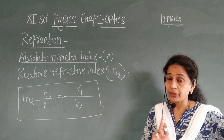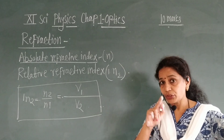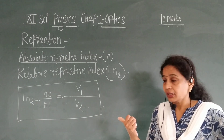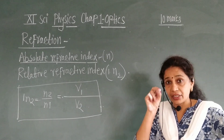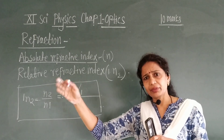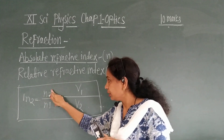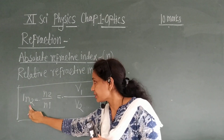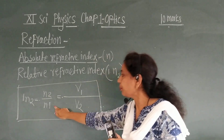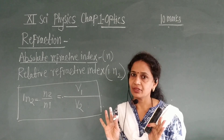There is a difference between absolute and relative refractive index. Absolute refractive index is the ratio of the velocity of light in vacuum to its velocity in any other medium. Relative refractive index is the ratio of the velocity of light in medium 1 (which may be air or diamond) to that in medium 2, given by N2 / N1 = V1 / V2. This is the important formula.